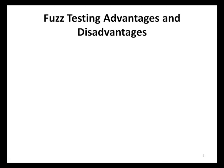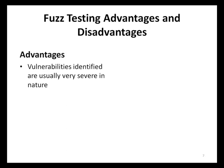As with any security testing process, fuzz testing has its advantages and disadvantages. One of the key advantages is that types of security vulnerabilities identified through this process are usually very severe in nature. Examples include, but are not limited to, buffer overflows, integer arithmetic errors, denial of service, and other vulnerabilities that could allow a malicious user to assume complete control over an application or render an application inaccessible by authorized users.